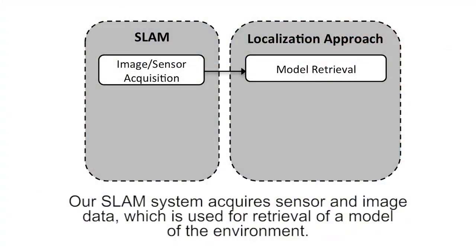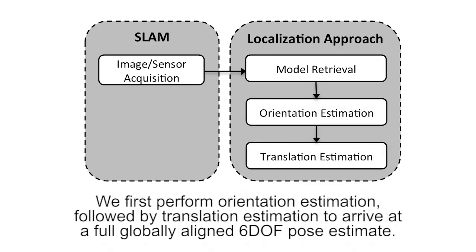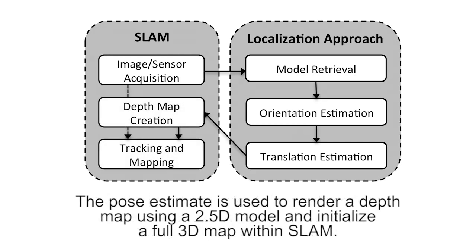Our SLAM system acquires sensor and image data, which is used for retrieval of a model of the environment. We first perform orientation estimation, followed by translation estimation, to arrive at a full, globally aligned 6-degree-of-freedom pose estimate. The pose estimate is used to render a depth map using a 2.5D model and initialize a full 3D map within SLAM.